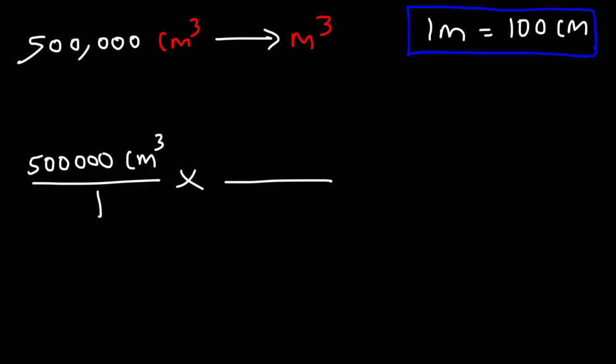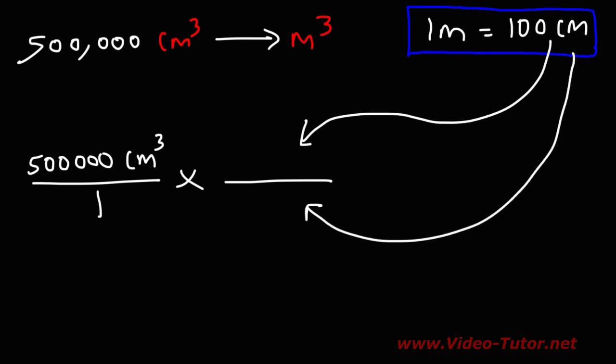Now, there are two parts to that equation. We have one meter on one side and 100 centimeters on the other side. Should we put the 100 centimeters on top of the second fraction or on the bottom of the second fraction? What would you say? What would you place it?